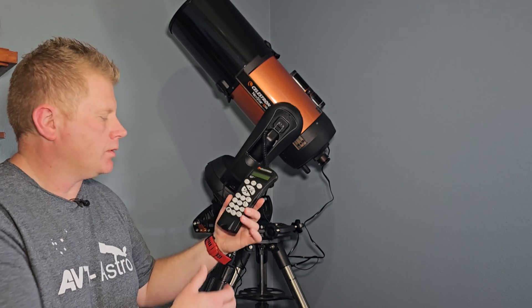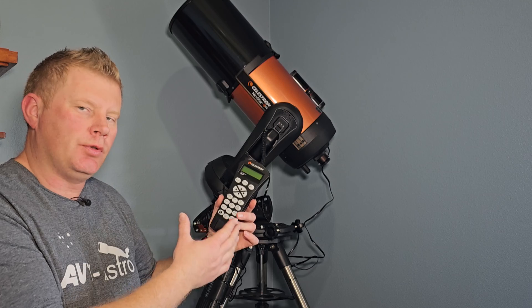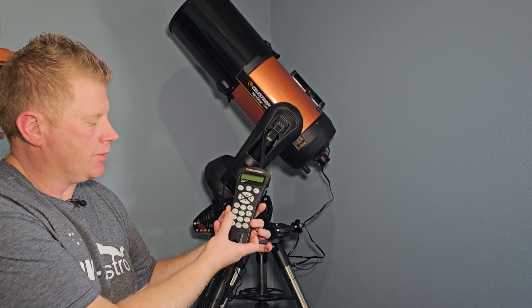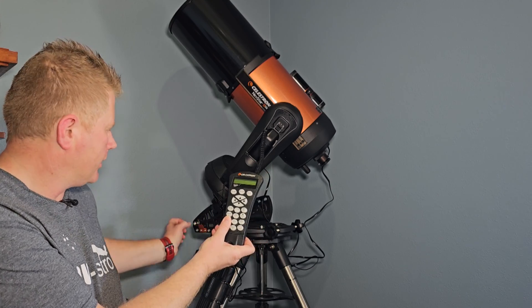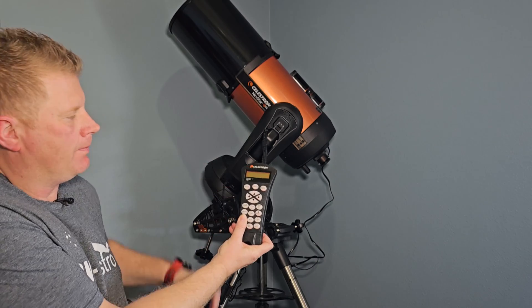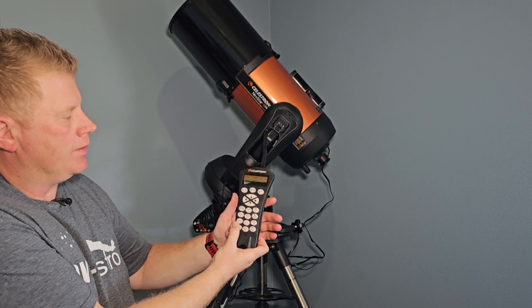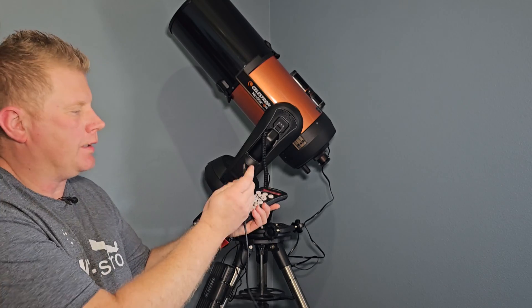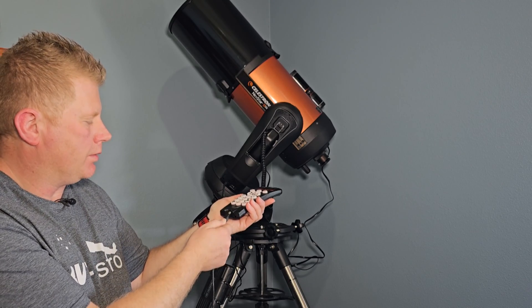Alright guys, so the first step to get into the boot loader is you need to press the menu button and the Celestron button at the same time before you turn the hand controller on. So pressing those both down, boot loader is loaded so we're good to go and now you plug in the USB cord.